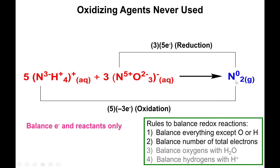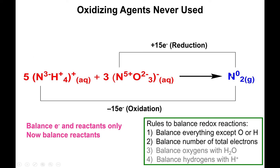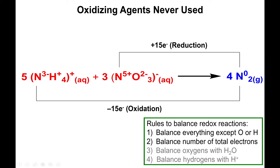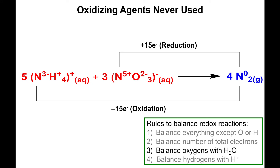Notice that the nitrogen hasn't been touched yet. When we apply those coefficients, we have five nitrogens from the ammonium and three nitrogens from the nitrate — eight nitrogens altogether. To balance this, we simply multiply N2 by four. The electrons are now balanced, and the non-oxygen, non-hydrogen atoms are balanced, so now we balance the oxygens.